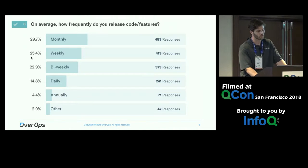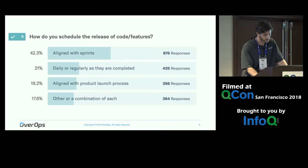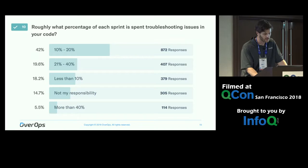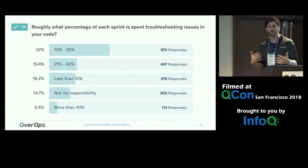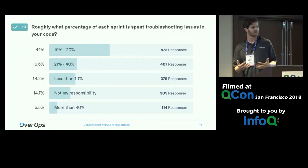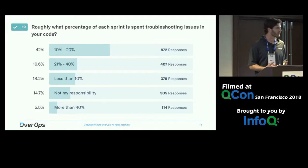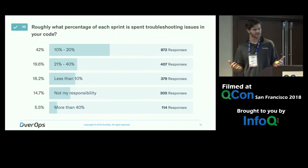Questions like how frequently do you release code — weekly, monthly — most people are pretty agile. How do they schedule releases? Most people align with sprints. So far everything seems pretty hunky-dory, right? Everybody's using all the tools, everybody's releasing quickly, the infrastructure is modern.